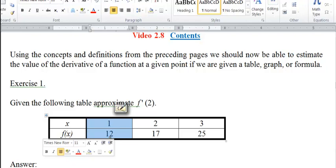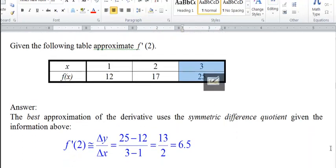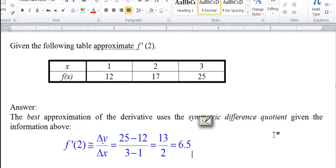But the best way to do it is to take this point and this point on either side and do the slope formula, which is the symmetric difference quotient. If you work that out, that's 25 minus 12 for Δy or Δf, so a change of 13 going up from the point (1,12) to (3,25).